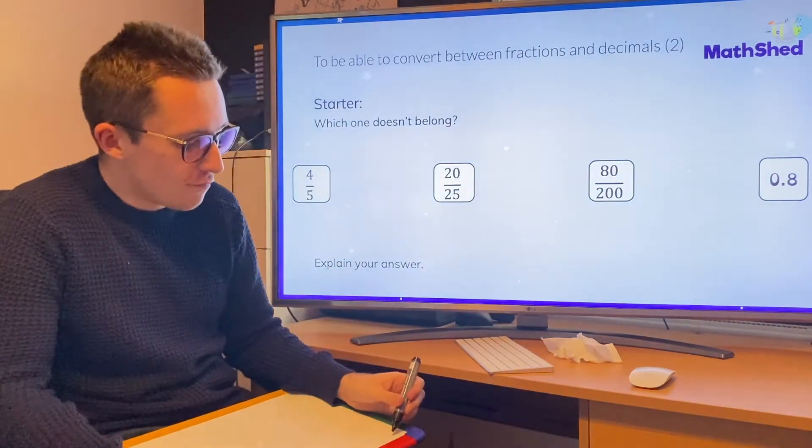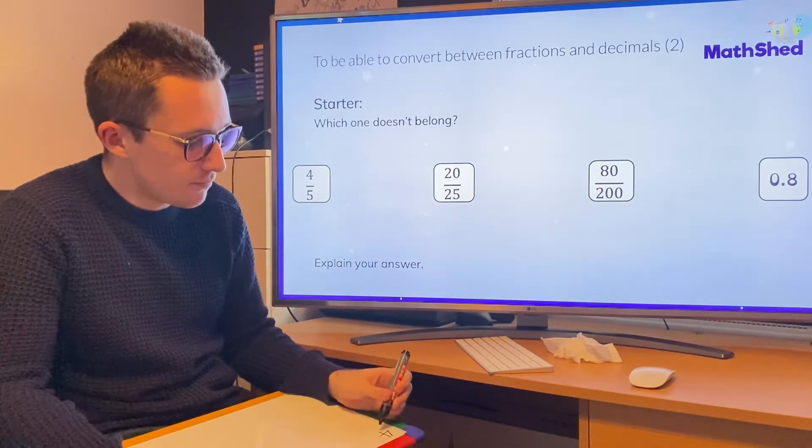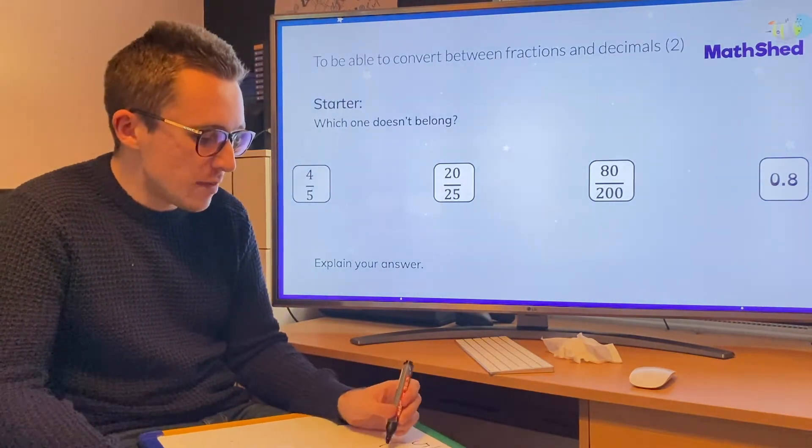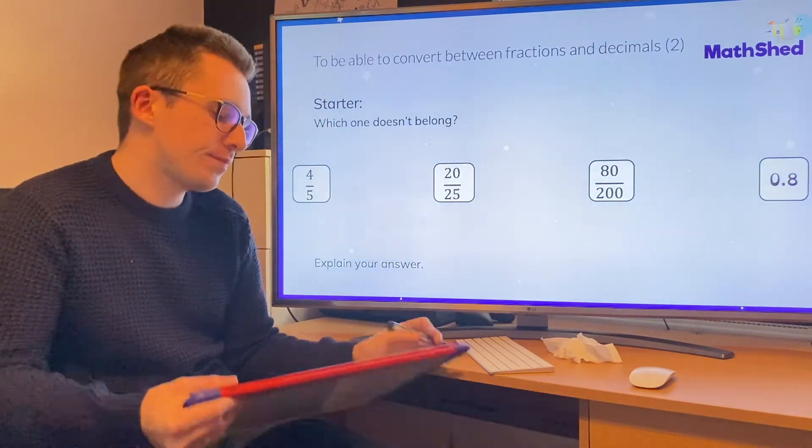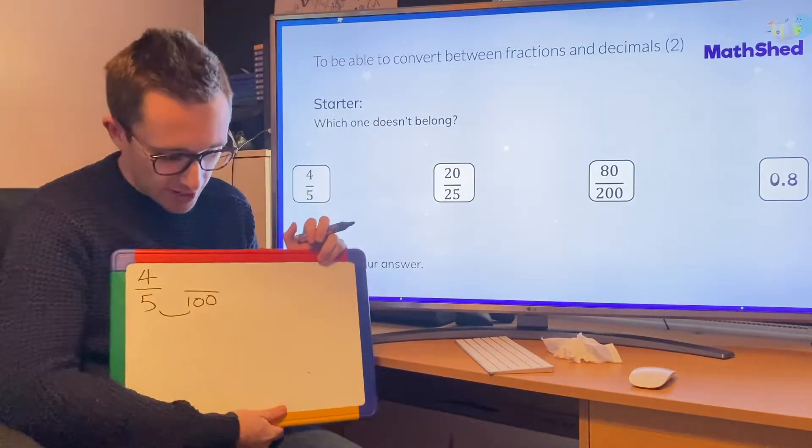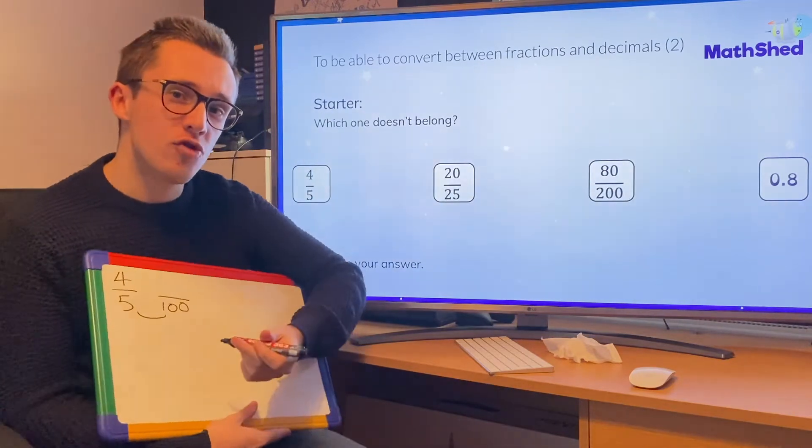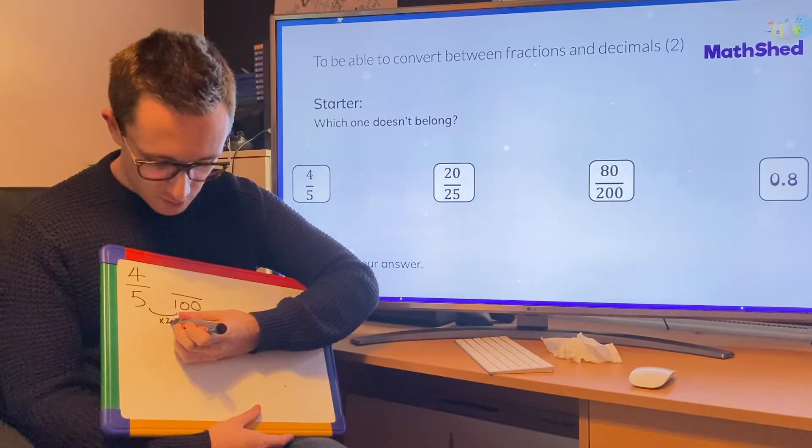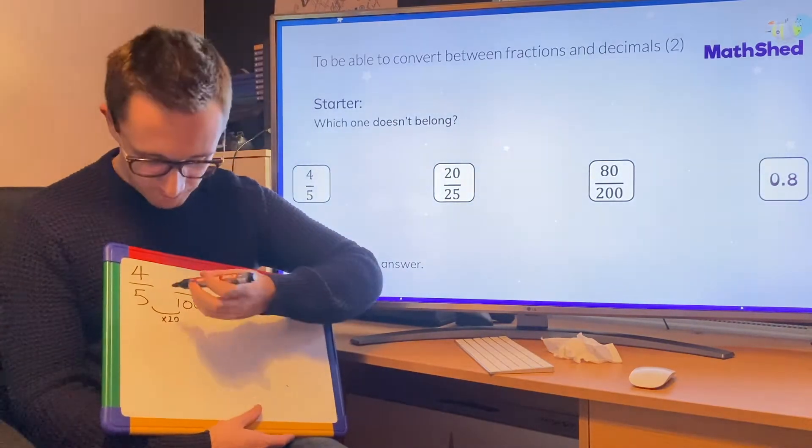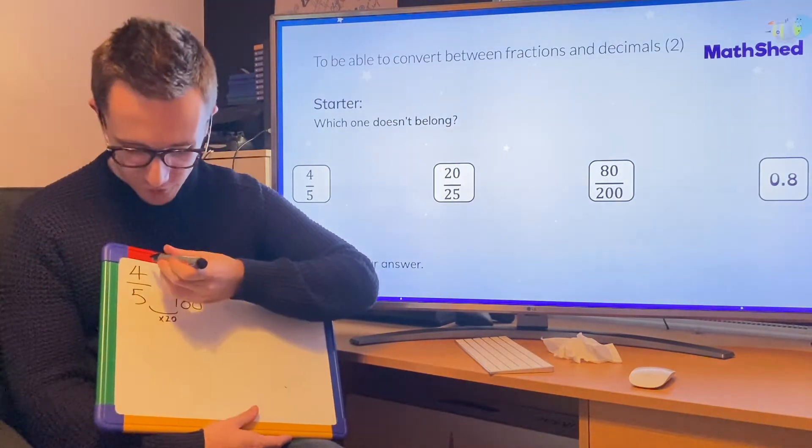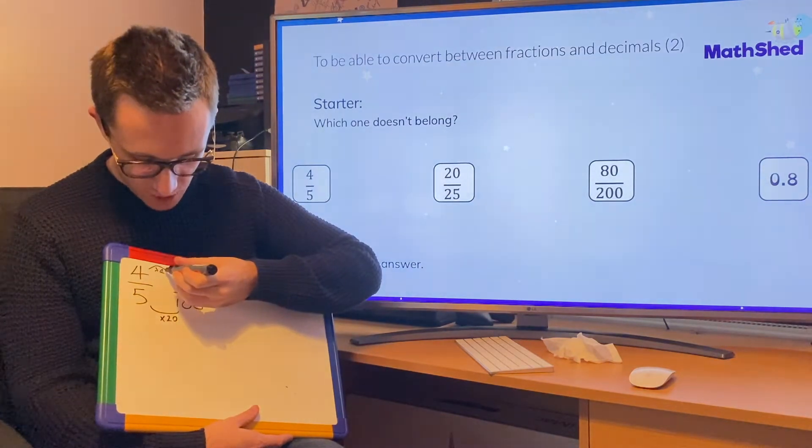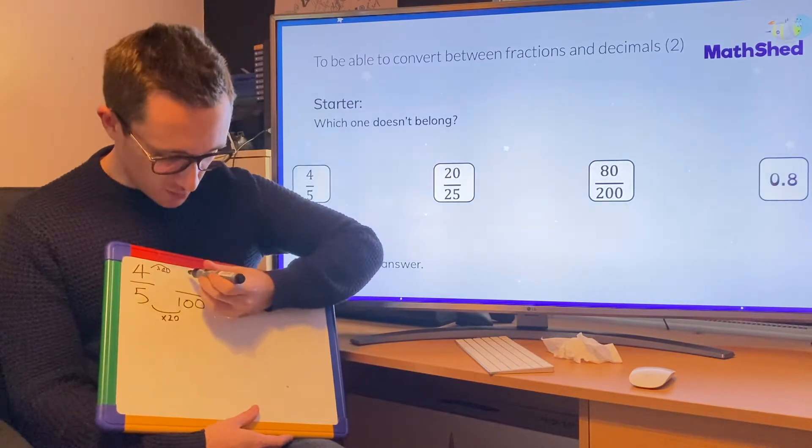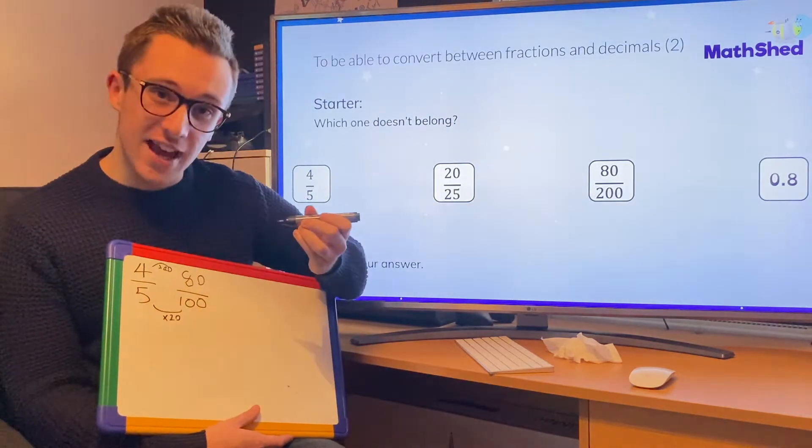So the first one I'm going to start with is four fifths. I'm going to try and make it so that it has a denominator of 100. Now to go from 5 to 100, I'm going to multiply by 20. What I do to the bottom, I have to do to the top. Four times by 20 is 80.